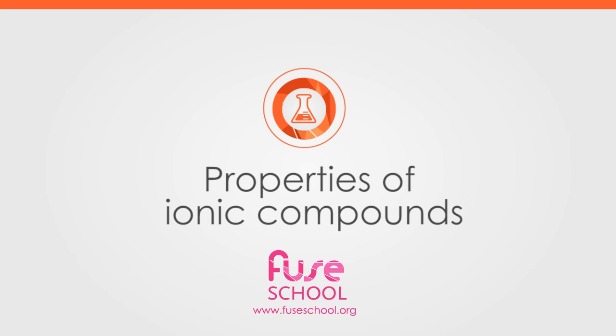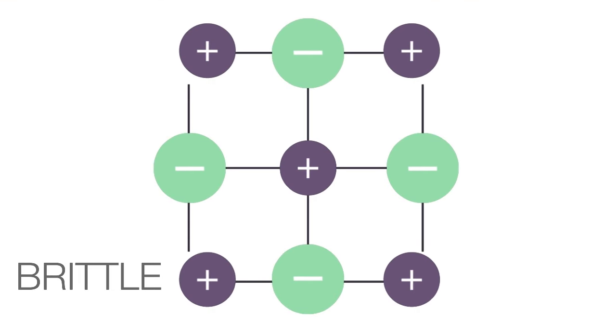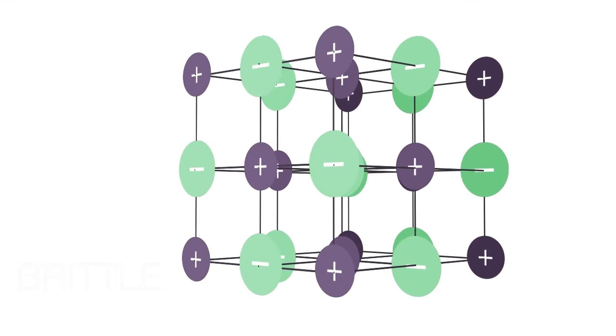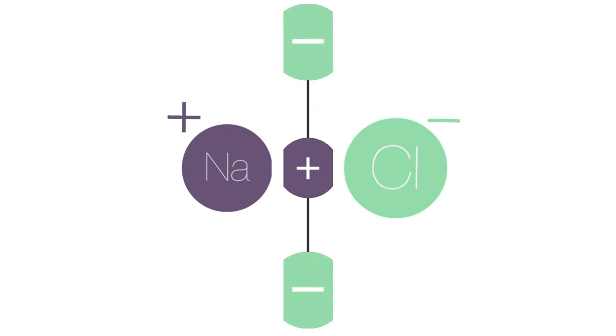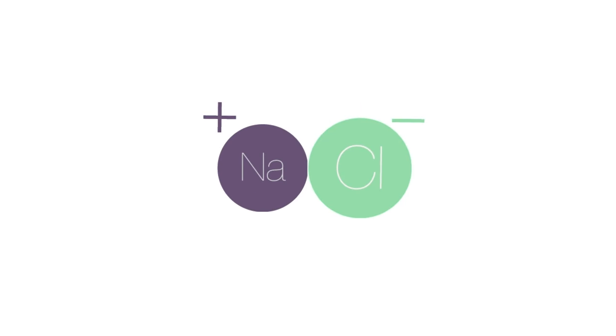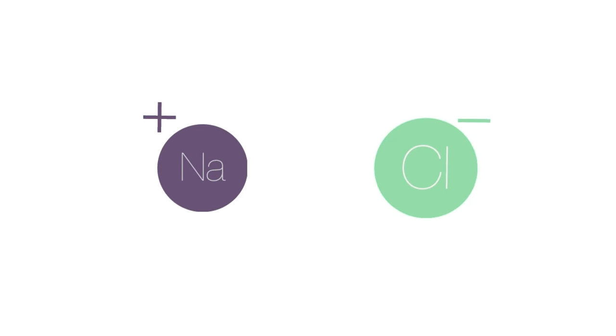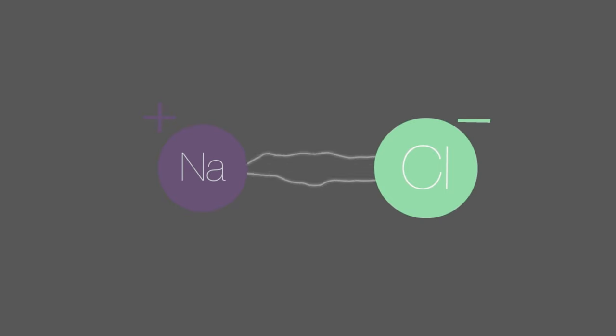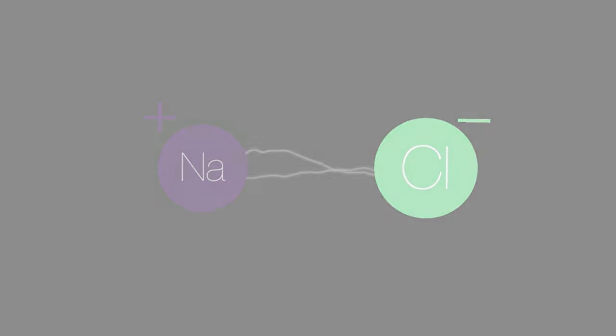These ionic compounds have very high melting points and are brittle because of their 3D giant ionic lattice structure. The strong electrostatic attractions holding the 3D lattice structure in place mean that a lot of energy is required to overcome these attractions.